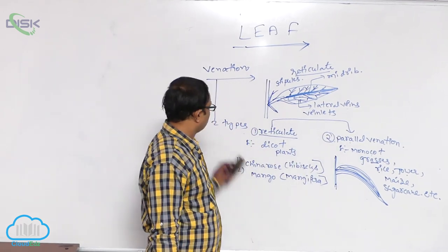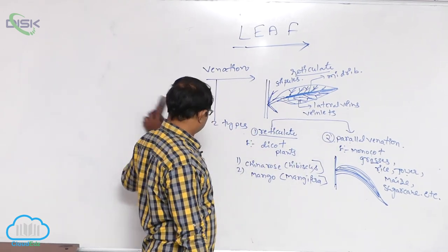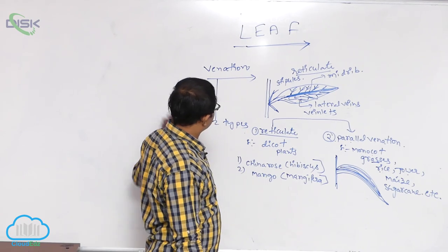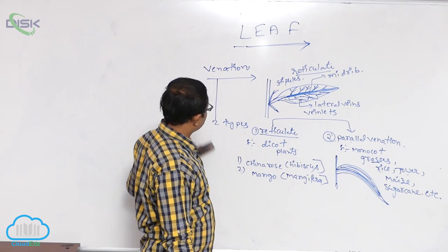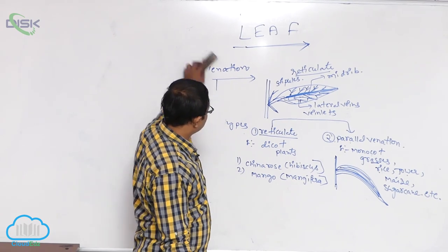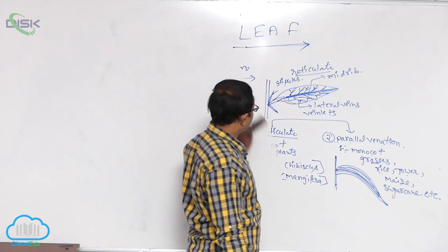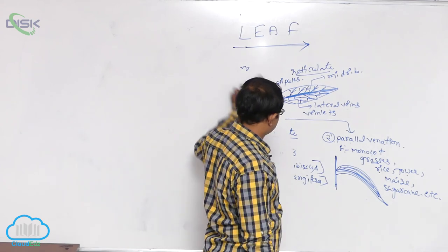So those are the two types of venation. After venation, the next topic is types of leaves.